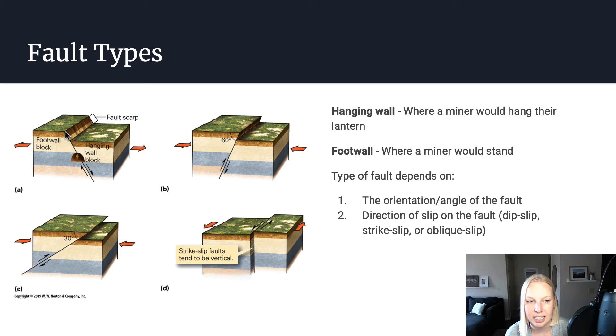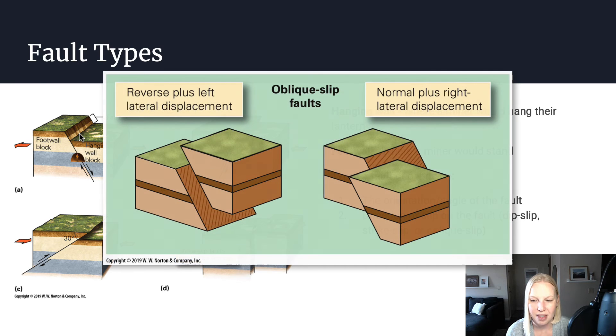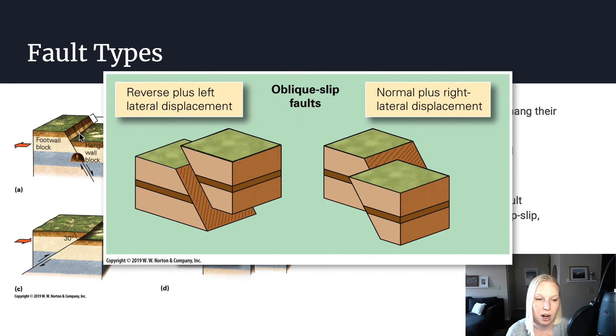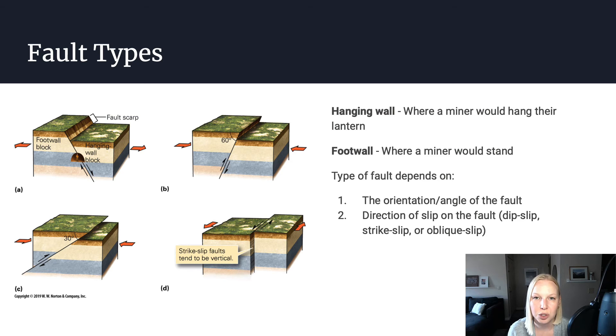Something that's sort of in between, let's say that the hanging wall slips at an angle, that would be what we call oblique slip. So it's not entirely dip slip, it's not entirely strike slip, it is oblique slip, it's slipping at an angle. We need these two pieces of information in order to determine what type of fault we're looking at.